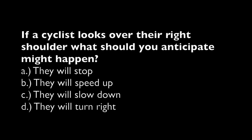If a cyclist looks over their right shoulder, what should you anticipate might happen? A. They will stop. B. They will speed up. C. They will slow down. D. They will turn right.